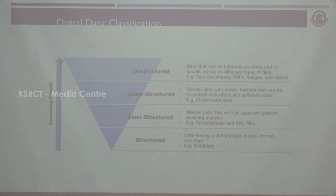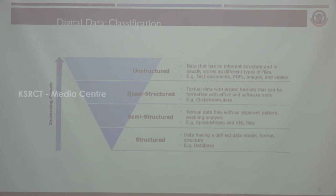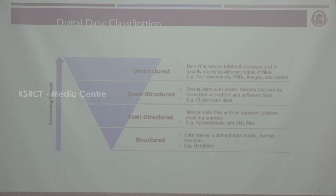There is a digital data classification. One is unstructured, quasi-structured, semi-structured, and structured. Unstructured means data that has no inherent structure, usually stored in different data files like documents, PDFs, images, and videos. Quasi-structured is textual data with erratic formats — example: clickstream data, where clicking produces some data. Semi-structured is textual data files with an apparent pattern enabling analysis — example: XML files and spreadsheets. Structured data has different data models and formats available — example: database.